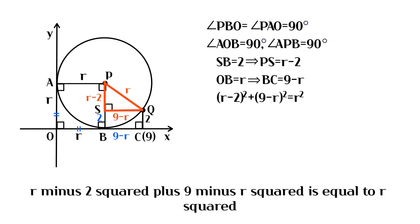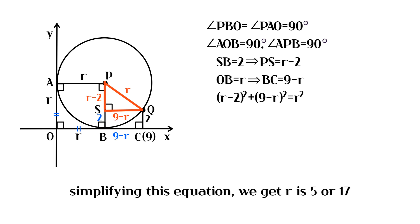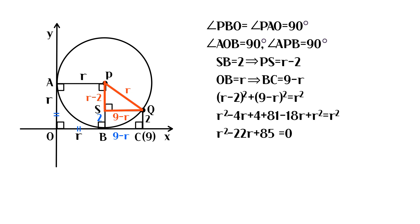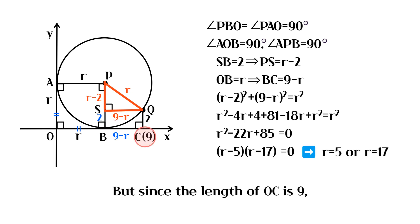(r − 2)² + (9 − r)² = r². Simplifying this equation, we get r = 5 or r = 17. But since the length of OC is 9, r must be less than 9.